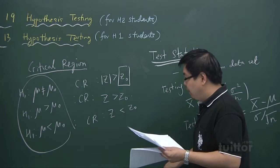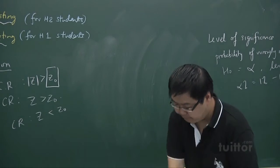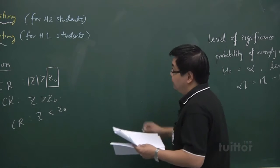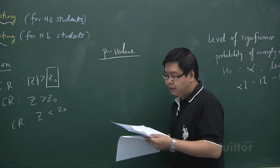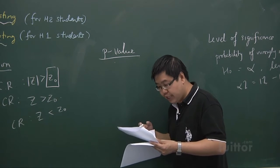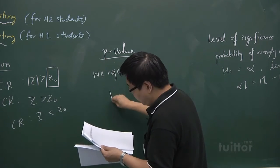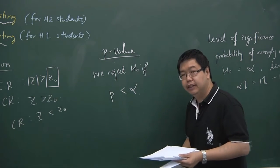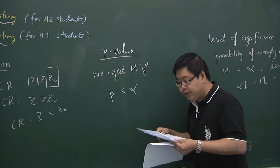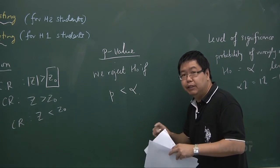The final concept is the p-value. The p-value is the smallest level of significance alpha for which the null hypothesis would be rejected. The null hypothesis is rejected if the p-value is less than the level of significance. We will study the p-value in more detail in the next video clip. With that, we end this video clip. Thank you.